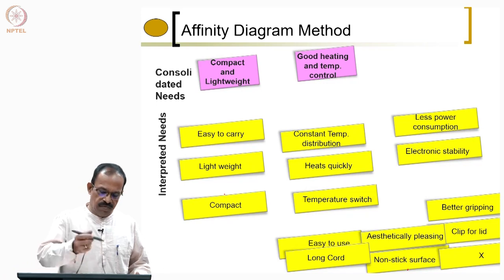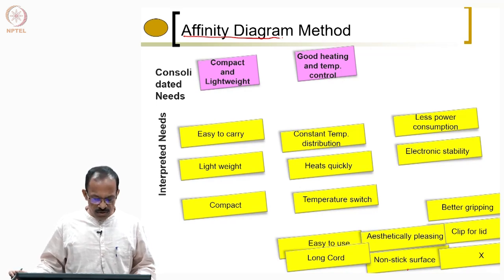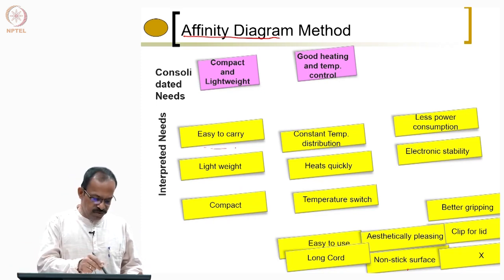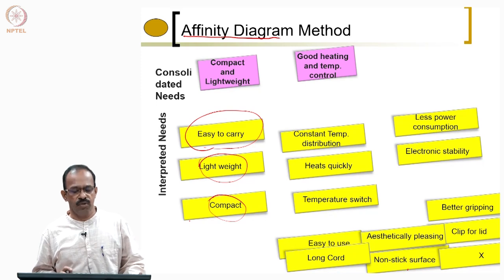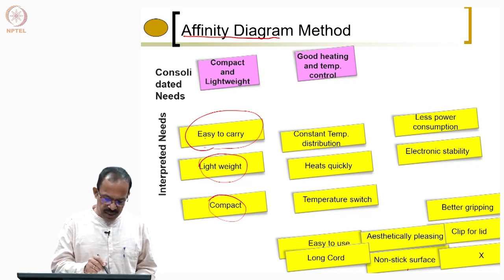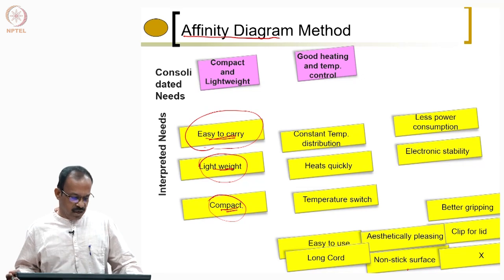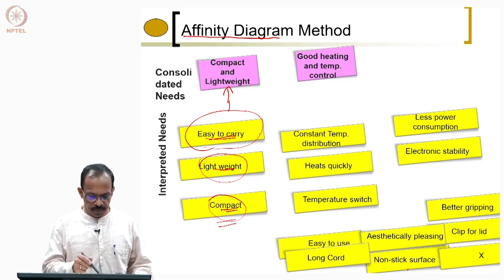One of the methods we discussed for need analysis was the affinity diagram method. In this method, what we do is write down all those interpreted needs from the various customers. When you convert raw data into interpreted needs, you write down all those needs on positive pads. Whatever you get from each customer will be converted to a positive pad, and then as a team you start sorting out these needs based on the affinity of each need towards a particular requirement. For example, you see something like 'easy to carry,' similarly 'lightweight,' 'compact' — all these represent the same kind of requirement from the customer. We try to put all those things together and find out what is the actual need given by these interpreted needs.